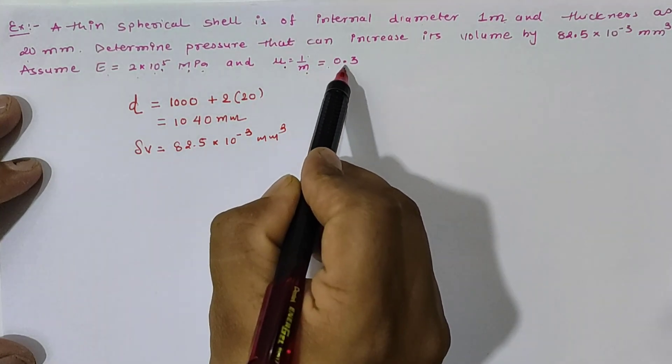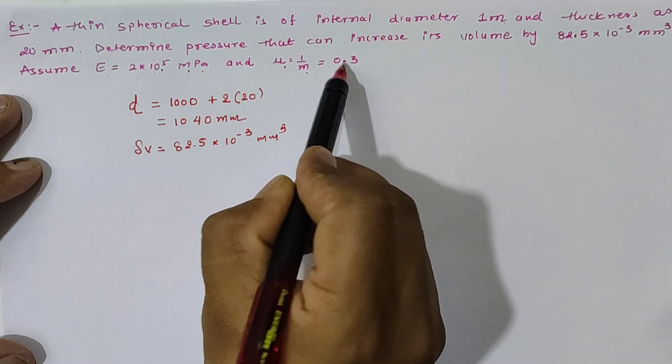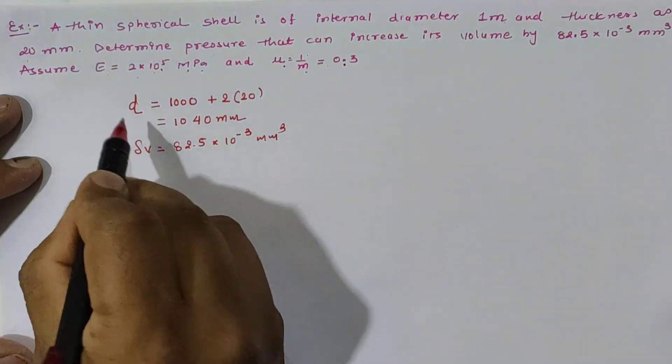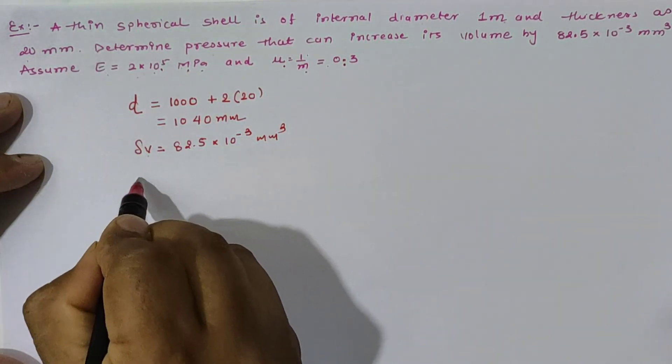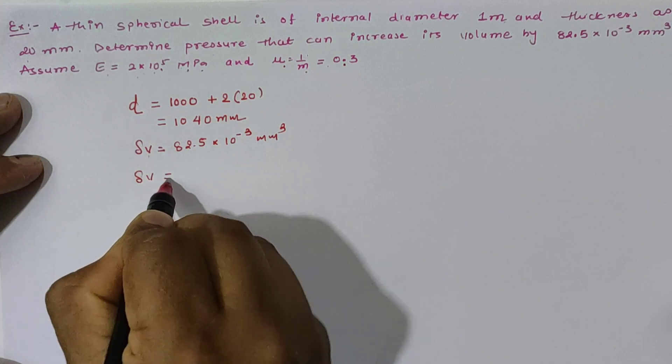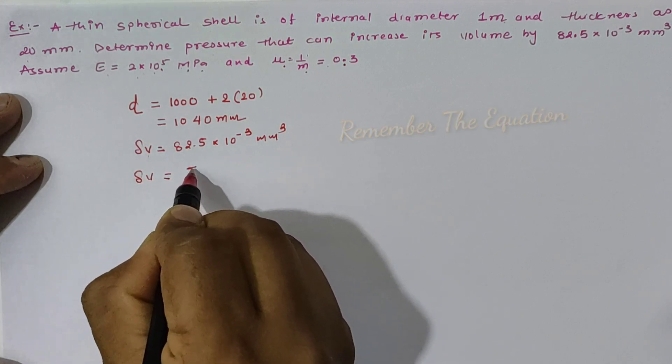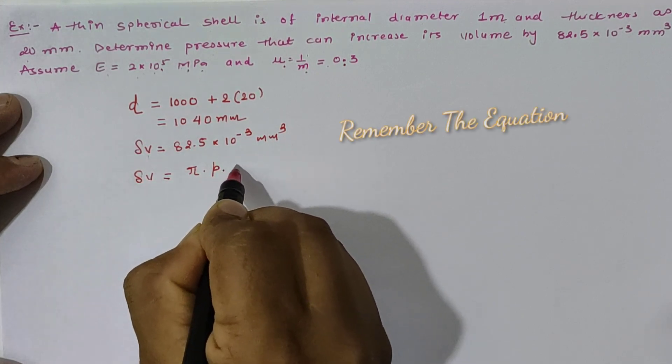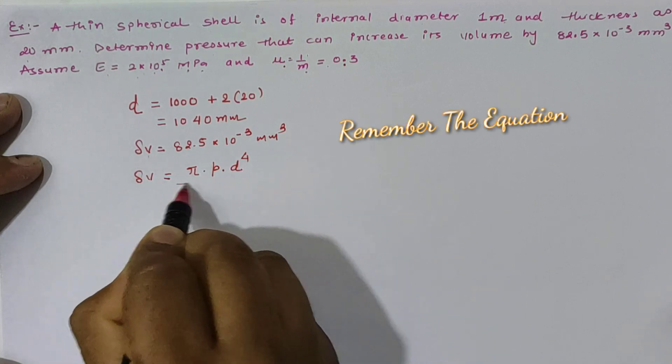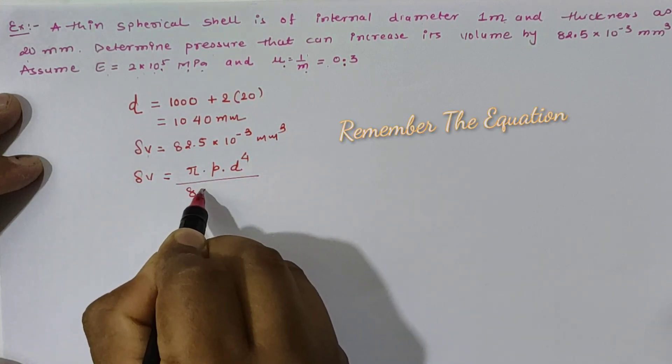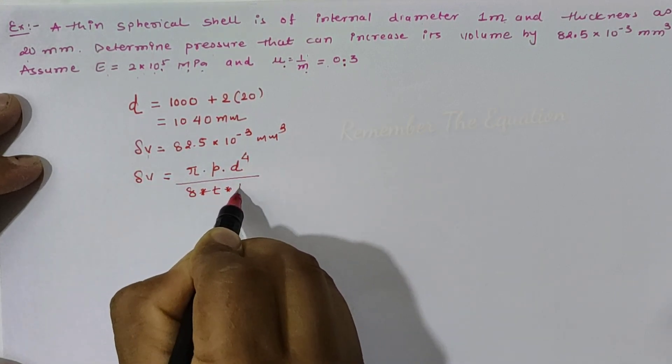So according to the sphere, Δv can be calculated by the equation: π × pressure × diameter^4 divided by 8 × thickness × modulus of elasticity × (1 - 1/m).